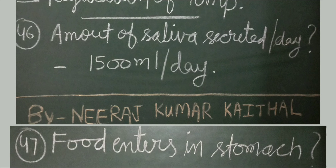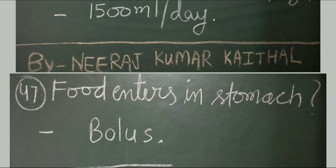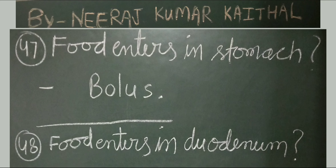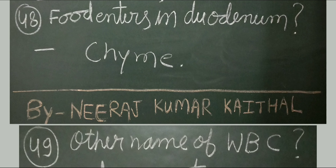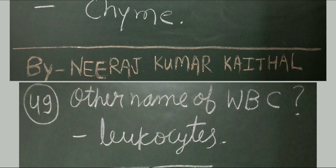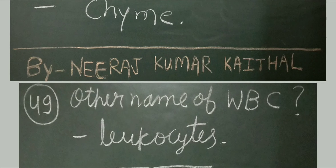What do we call the food that enters the stomach? Bolus. What do we call food that enters the duodenum? Chyme. Other name of WBC or white blood corpuscle is leukocytes. WBC's main role is to protect us from infection. The normal WBC count is between 4,000 to 11,000.